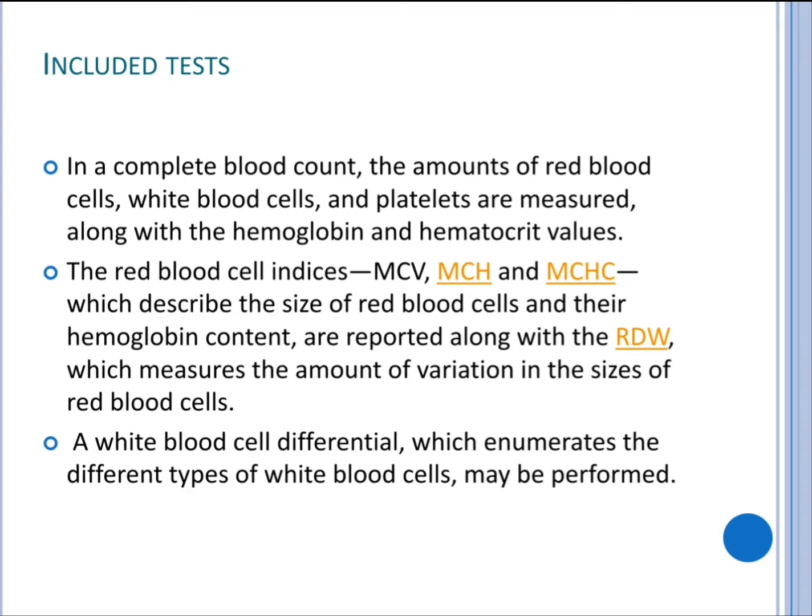Tests included in a complete blood count measure the amounts of red blood cells, white blood cells, and platelets, along with hemoglobin and hematocrit values. The red blood cell indices — mean corpuscular volume, mean corpuscular hemoglobin, and mean corpuscular hemoglobin concentration — describe the size of red blood cells and their hemoglobin content, and are reported along with the red cell distribution width, which measures the variation in sizes of red blood cells.